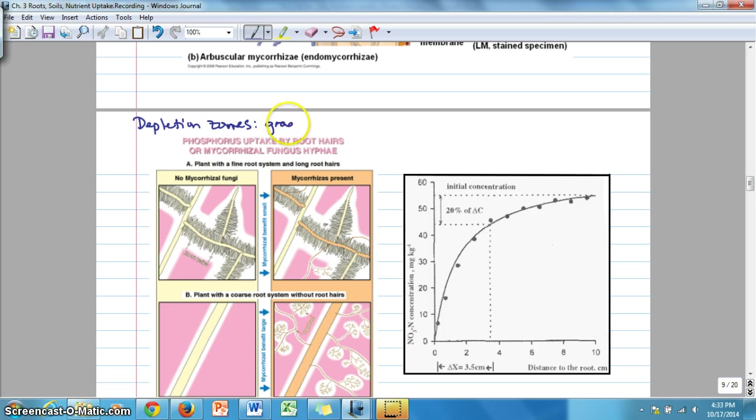So depletion zones, it's shown in plural here, are gradients, gradients of nutrients, or nutrient concentrations moving away from the root. So the gradient is such that it's low at the surface of the root. It's higher, the concentration is higher away from the root, some distance away.